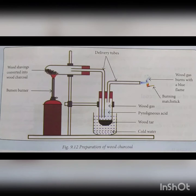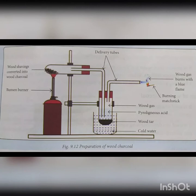For this, the materials required are wood shavings, two test tubes, a Bunsen burner, two delivery tubes, a trough containing cold water, a matchbox and two clamps. We set up the apparatus as shown in the following figure.